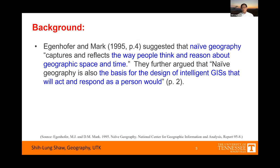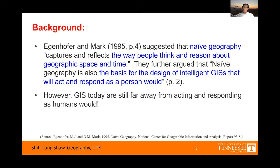Some background: Max Egenhofer and David Mark, back in 1995 — more than 25 years ago — suggested that naive geography captures and reflects the way people think and reason about geographic space and time. They also argued that naive geography is the basis for the design of intelligent GIS that will act and respond as a person would. This was stated more than 25 years ago, but unfortunately, if we think about GIS today, we are still far away from acting and responding as humans would.